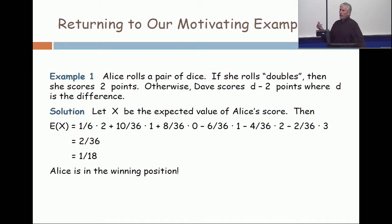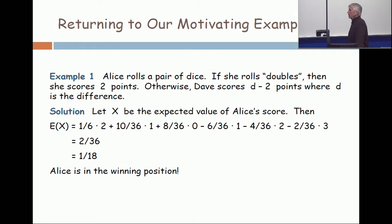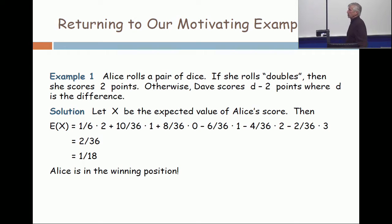A difference of one comes from two and one, three and two, four and three, et cetera. I calculated that probability to be ten over thirty-six. So ten over thirty-six of the time, the difference is going to be one, and Dave is going to score minus one — in other words, Alice is going to score plus one. So ten over thirty-six times plus one.